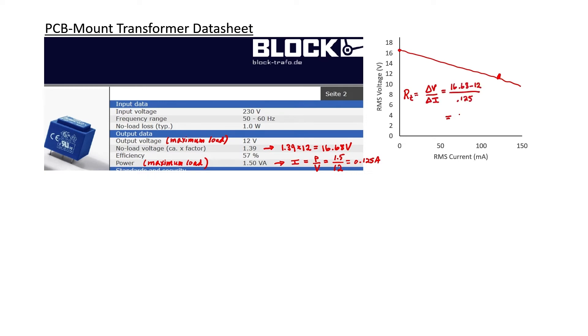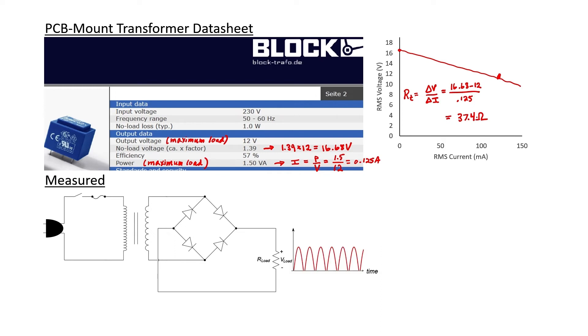Our transformer series resistance will be the slope of that line. This works out to 37.4 ohms. In the last video, I put together this circuit without the capacitor in parallel with the load. In the oscilloscope, we obtained a voltage versus time plot that looked like this.